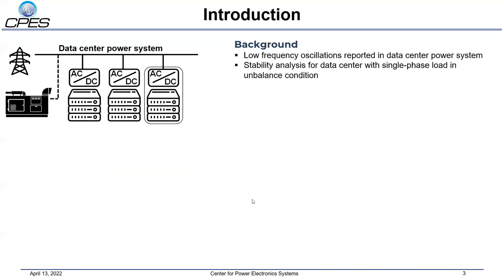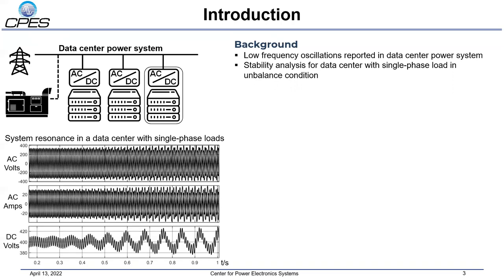A data center power system is a typical power electronics-based power system, where the grid or backup generator supplies power through a three-phase power distribution network for numerous power supply units (PSUs), which contain a single-phase power factor correction (PFC) and an isolated DC-DC converter. The dynamic interaction among non-ideal sources and a great many converters may bring instability to the system, including low-frequency oscillations. Several Facebook data centers have been reported to suffer from low-frequency resonance instability under a certain configuration of the distribution system. To better understand and avoid similar unstable phenomena, it is important to model and perform stability analysis of such systems.